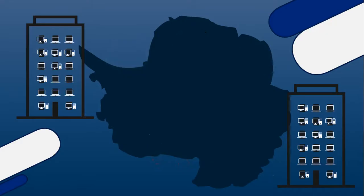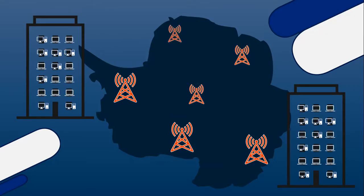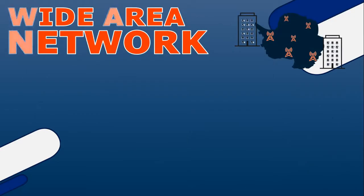These larger networks tend to use the infrastructure of another company that has been given permission by governments or municipalities — typically telecommunication companies like Telkom, Vodacom, or Frogfoot. These companies have installed cellular towers or digital fiber cables throughout the city or country. If you want to connect two or more branches together in one network, you need to use them and connect via the internet.